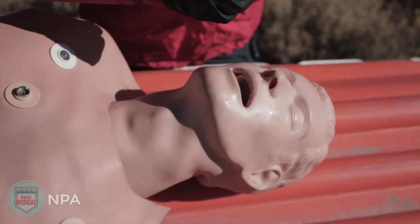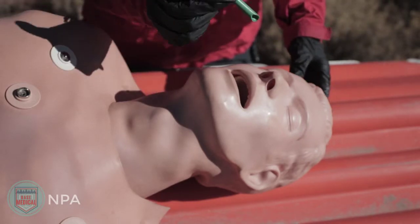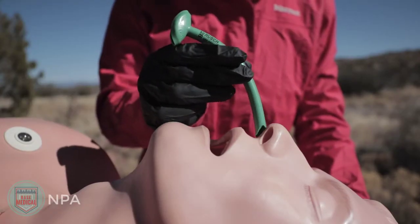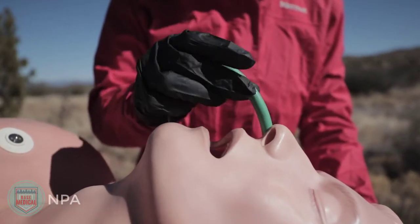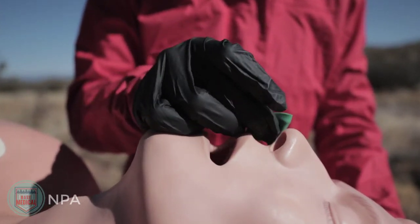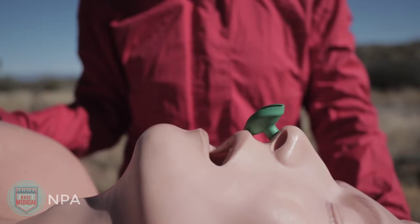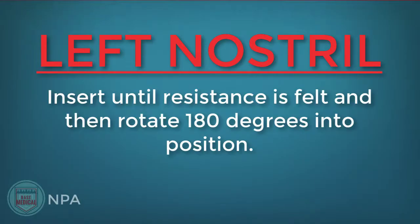Examine the patient's nostrils for any blockages and select the bigger one for insertion. Apply lube to the end of the NPA. The bevel should face the septum. Gently insert the NPA into the nostril following the basic curvature of the nose. The NPA should insert smoothly into the right nostril, and the flange should rest against the nostril. For the left nostril, insert until resistance is met and then rotate 180 degrees into position.